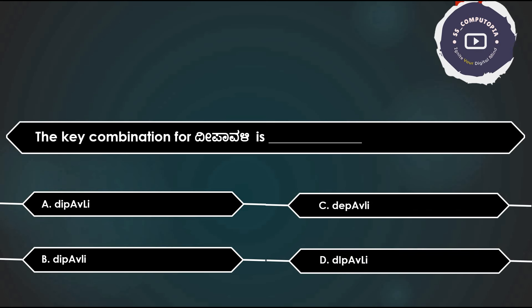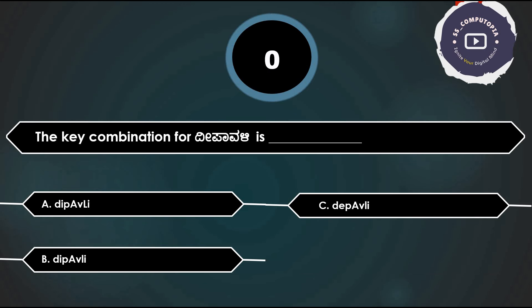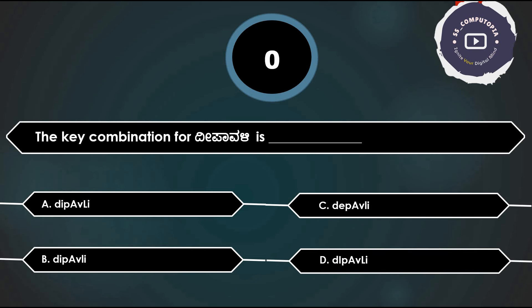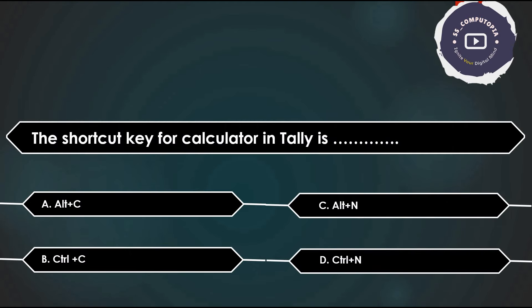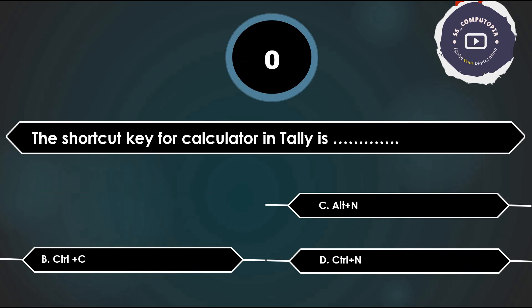What is the key combination for Dipavali? Answer: small d, capital I, small b, capital A, small v, capital L, and i — D-I-P-A-V-A-L-I — Dipavali. The shortcut key for Calculator in Intel is — Alt+C, Ctrl+C, Alt+N, or Ctrl+L? Answer is Alt+C.